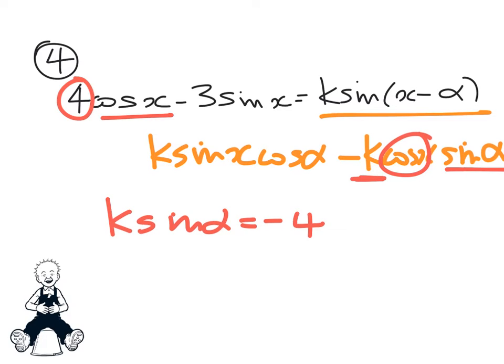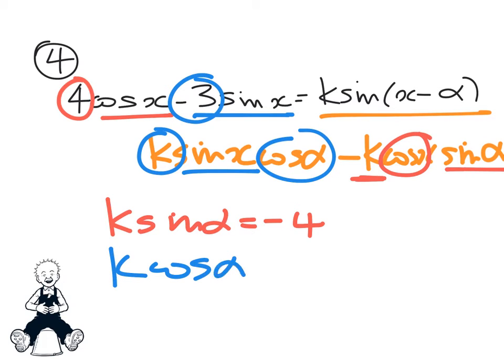Similarly, here's the sin x and beside it is negative 3. Here's the sin x and beside it is k cos alpha. So k cos alpha is going to equal negative 3.